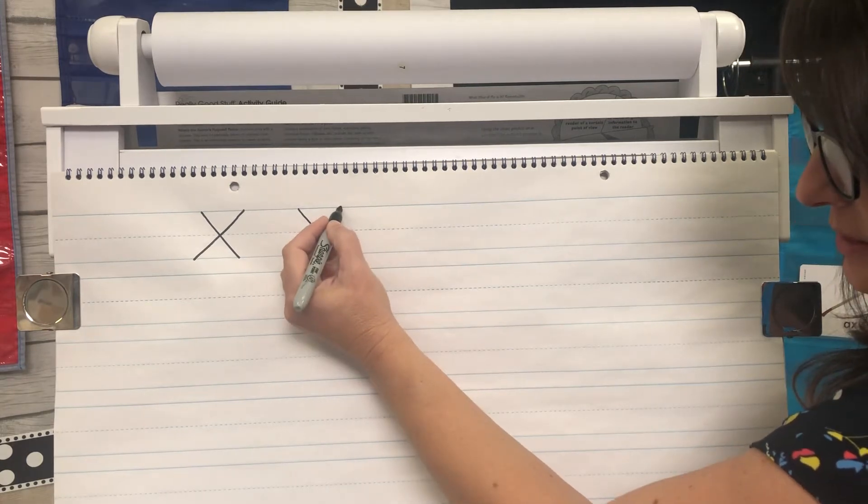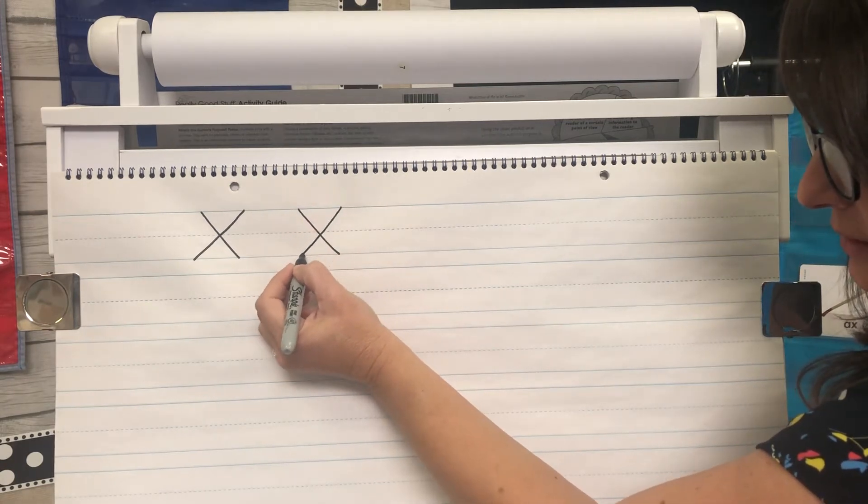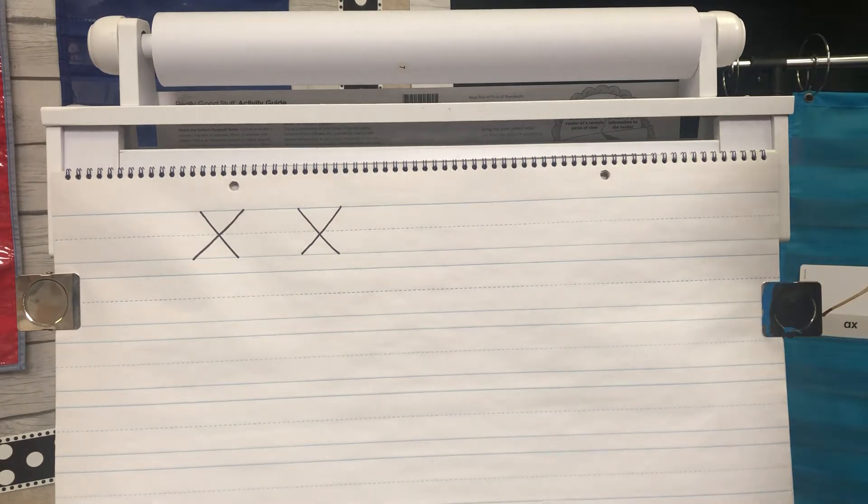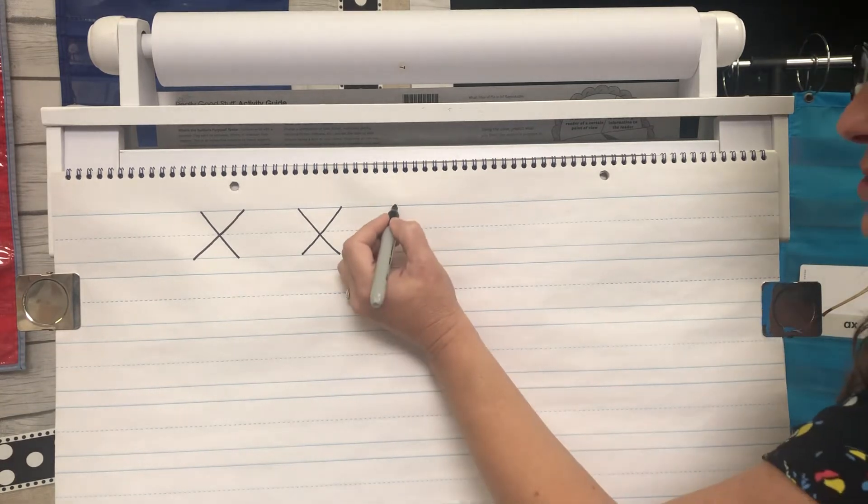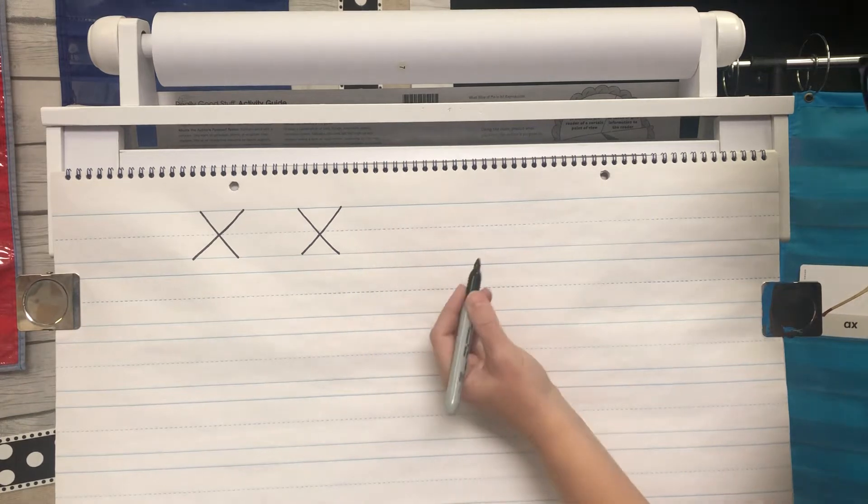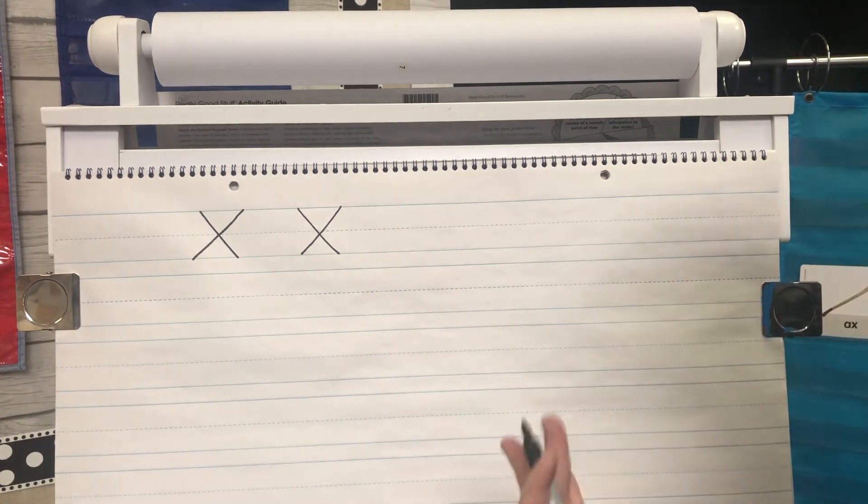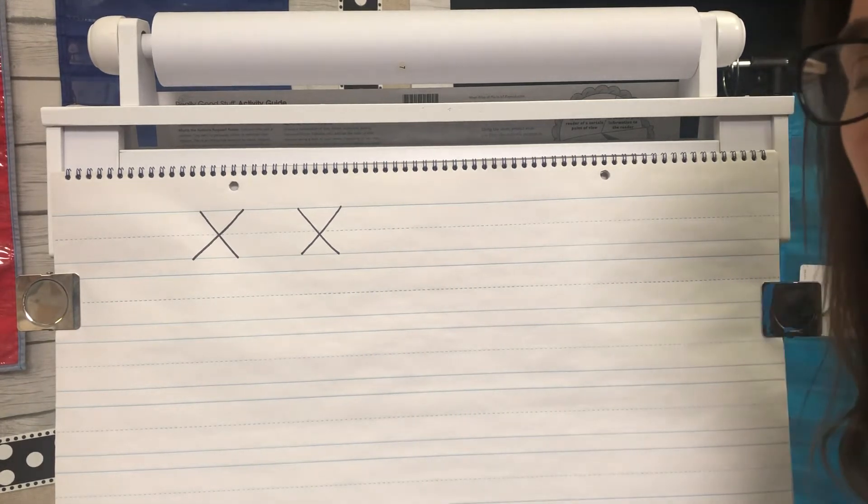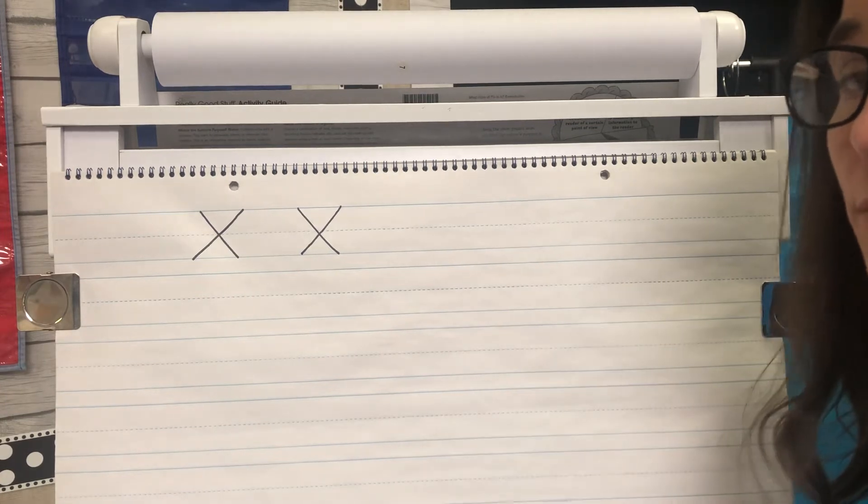This is capital X because it's starting at the ceiling. Now the problem that sometimes kids make is they'll start at the ceiling and they'll just make a straight line down and then they try to make a slanted line and it looks like the X is tilting one way or the other. So both of the lines actually have to be slanted.